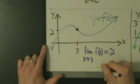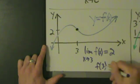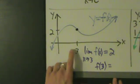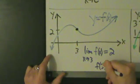But what is the actual value of the function? In other words, what's f of 3? Well, when x equals 3, what's the y value? It's 2. So f of 3 is 2.